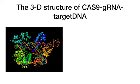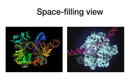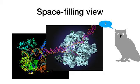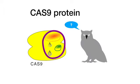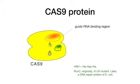Cas9, guide RNA, and target DNA form a complex shown here in a 3D ribbon model. A space-filling model is a bit easier to interpret. The Cas9 protein is shown here as a yellow blob. The features on the blob are domains — parts of the protein dedicated to a specific task. This is the guide RNA binding region.